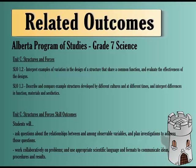Our student learning outcomes today are: 1.2 — interpret examples of variations in the design of a structure that share a common function and evaluate the effectiveness of the designs; and 1.3 — describe and compare example structures developed by different cultures at different times, and interpret differences in function, materials, and aesthetics.